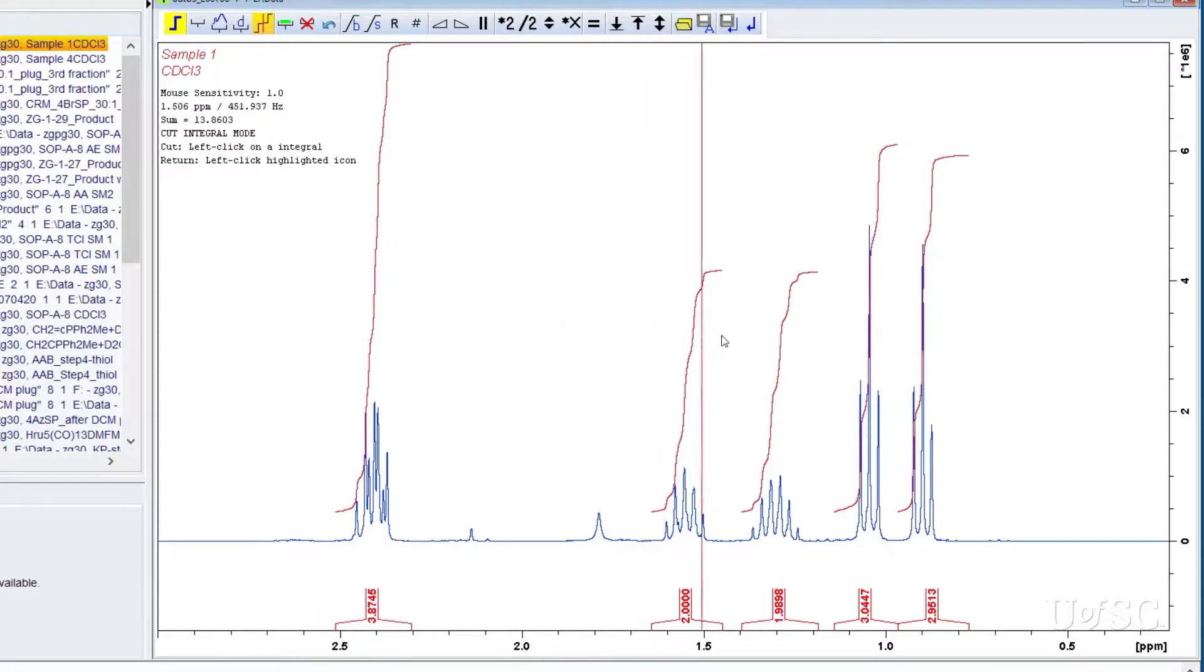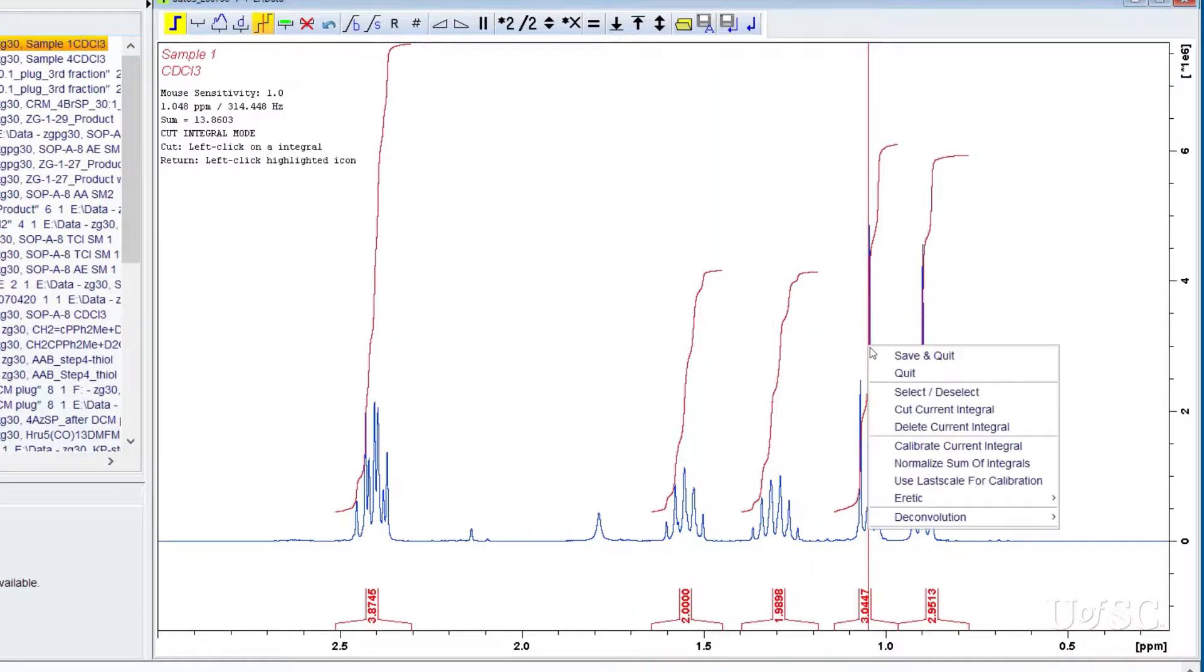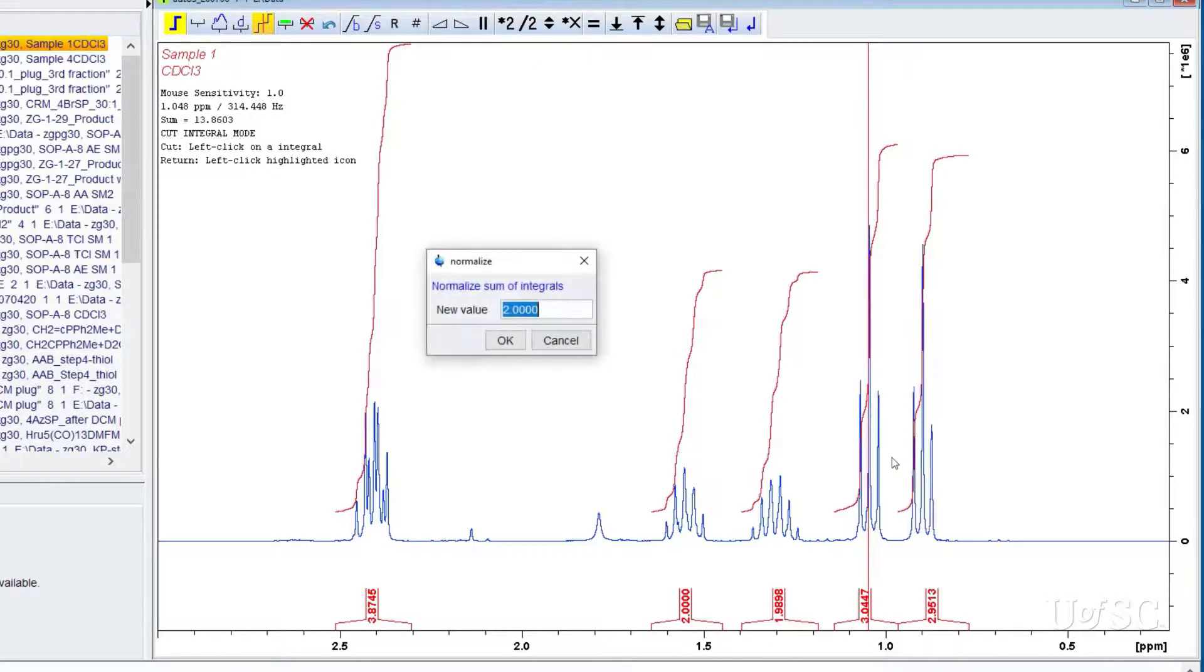In cases you do not know the origin of the peaks, or you are interested in comparing the relative intensities or determined product yields, you can use the normalize function. Move the red cursor onto any region and click the right mouse button. Choose normalize sum of integrals. A dialog box will open. Enter the value. In this case I will set it to 100. Click OK.